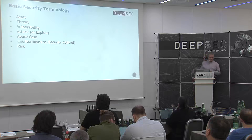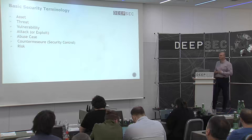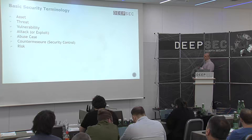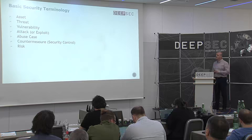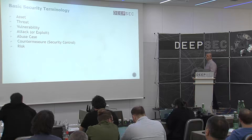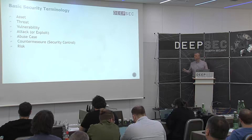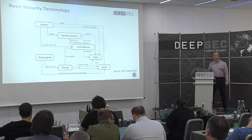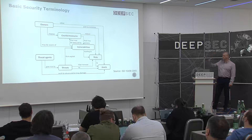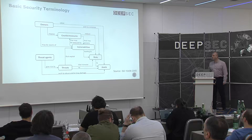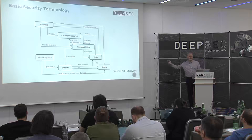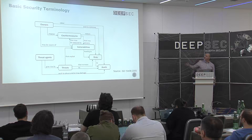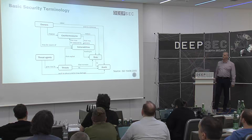Countermeasures or security controls — it's how we can protect our software. Maybe we need to implement something as part of our software code, or maybe we can use external security controls like firewalls, security gateways, etc. The last concept is risk. The role of application security and information security in general is to reduce the risk that a threat will exploit vulnerabilities we have and damage our asset. In most cases, we just need to reduce the number of vulnerabilities and their criticalities.